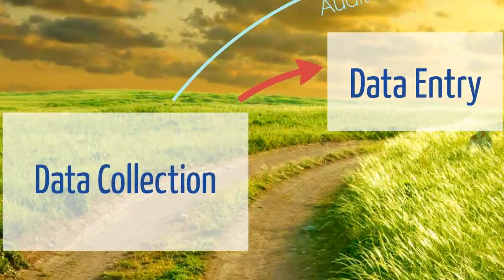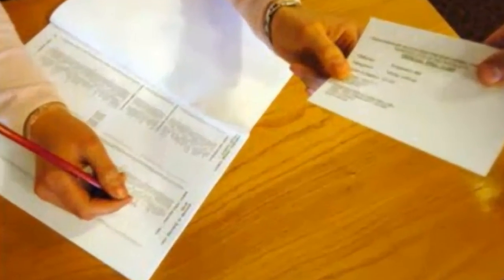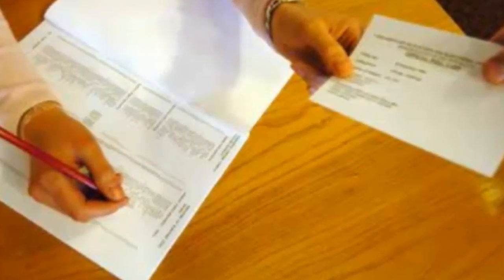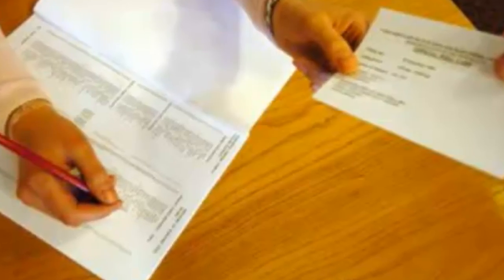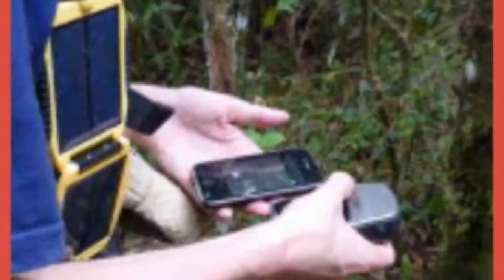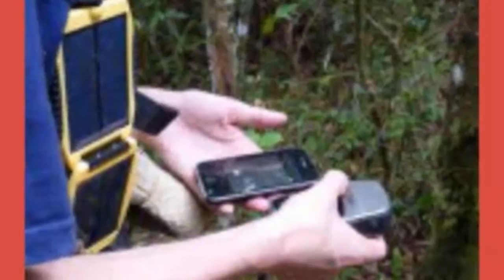If the activity involves paper questionnaires or field reports, checks need to be put in place to ensure all of the questionnaires or reports are handed into the office. A simple logging in process can be implemented to help with this. For electronic data, checks need to be conducted to ensure all of the files have been transferred and are not corrupted.